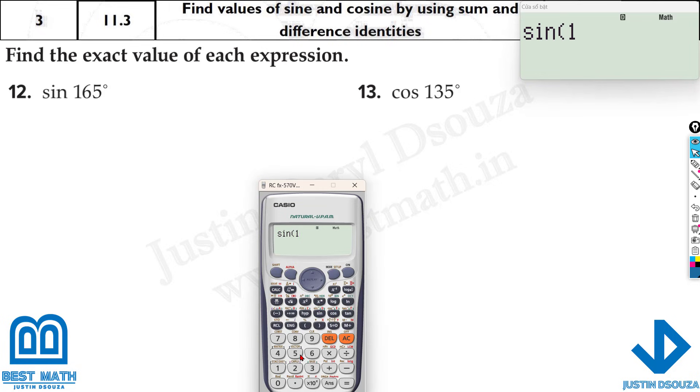So sine 165 would be equal to square root 6 minus square root 2 divided by 4. That's the correct answer. And cosine 135 is negative root 2 by 2.